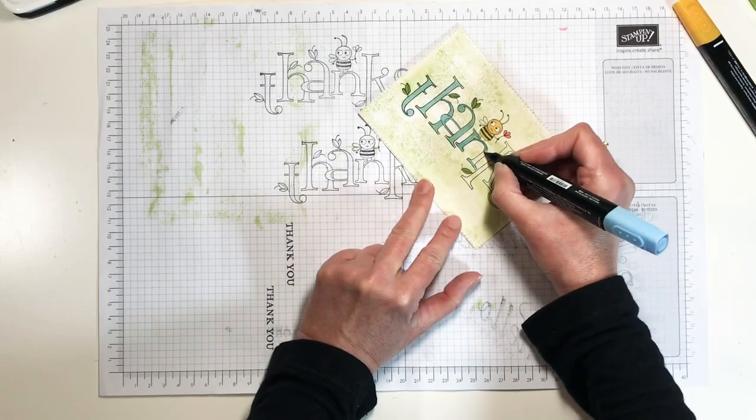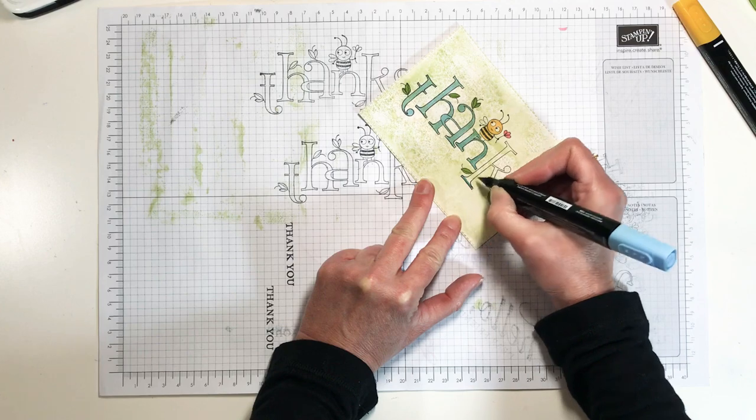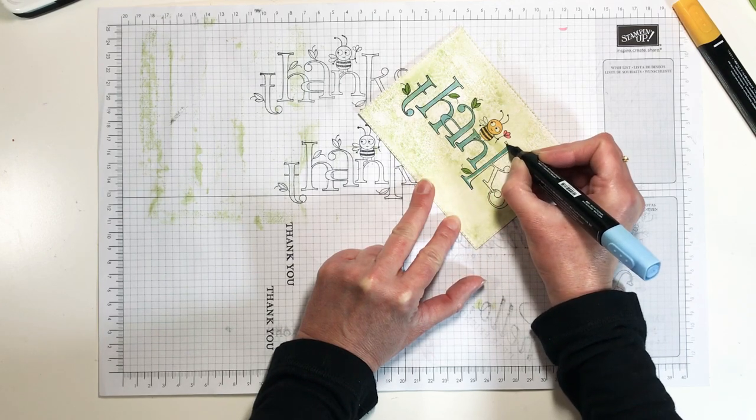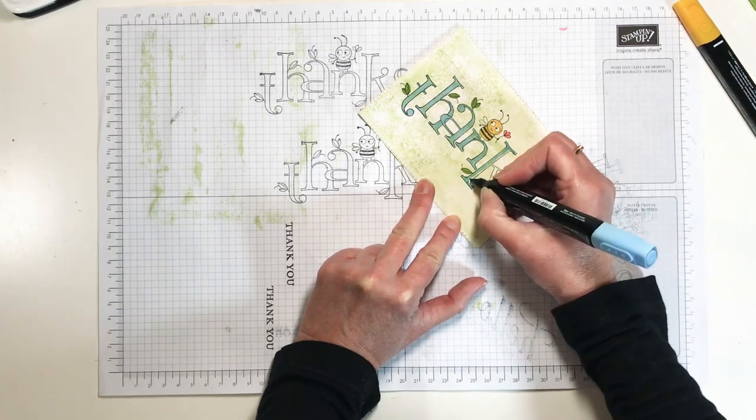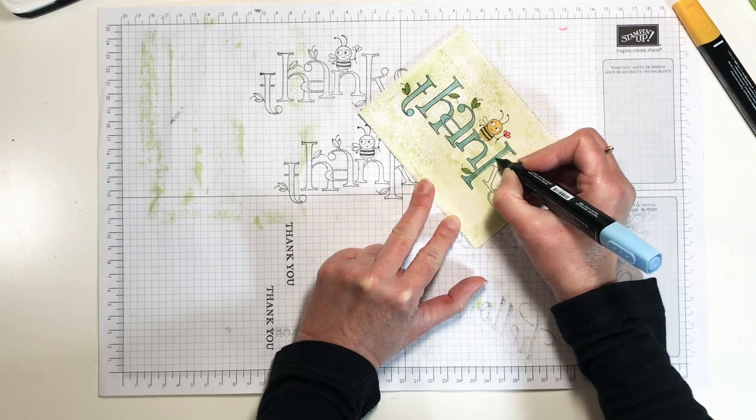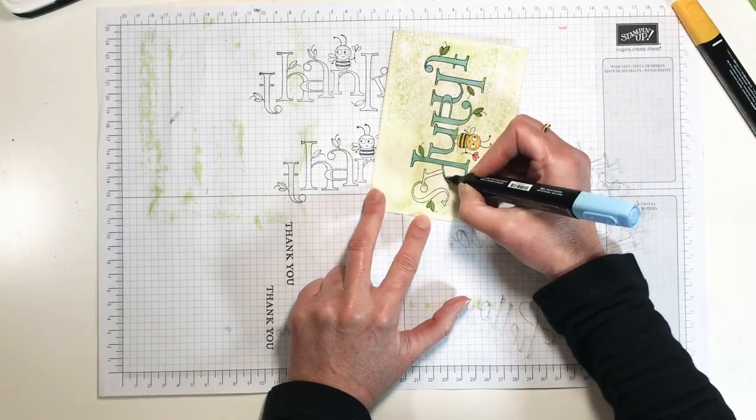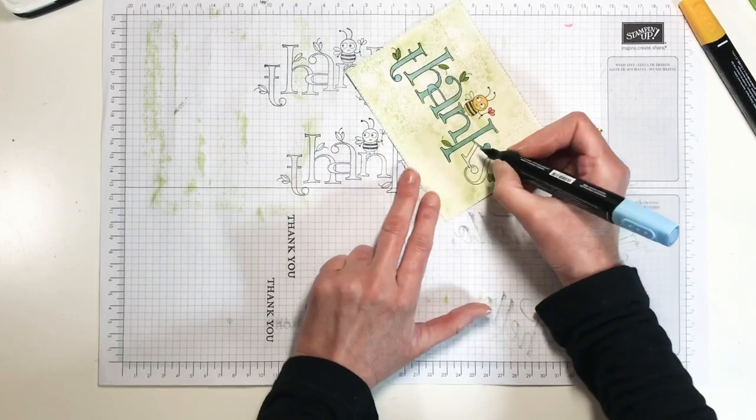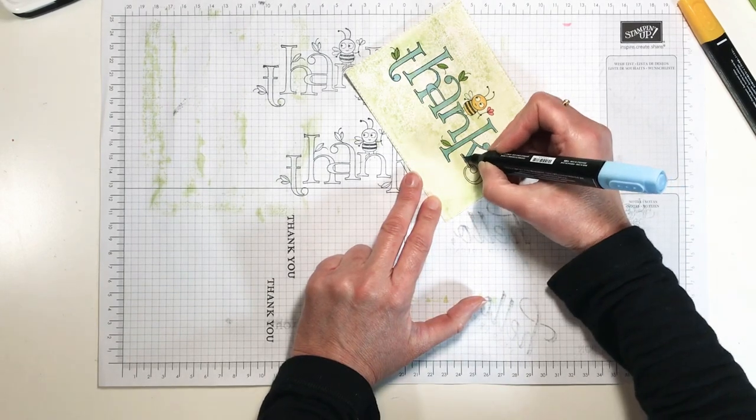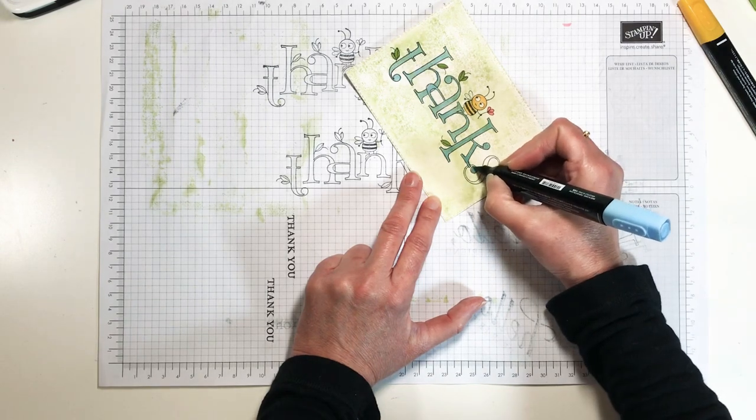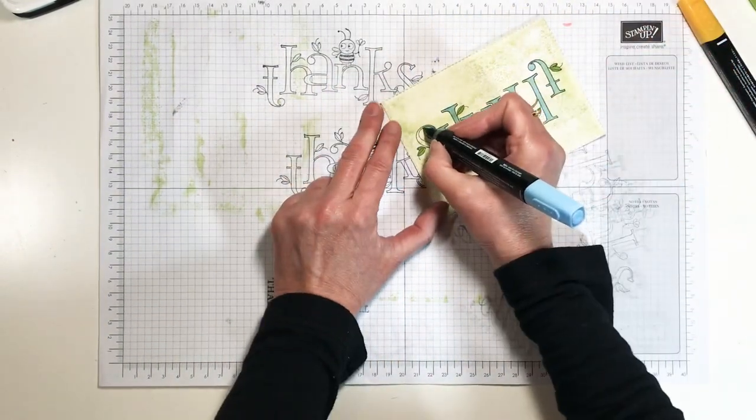When we first got the blends I wasn't sure if I liked them and it took me some time to practice and really figure out the use and why we needed them. I was never happy with stamp and write markers because they showed all the coloring lines. And then once we got the blends and I realized this was like no line coloring, it was the best thing ever.